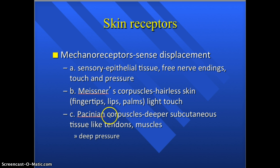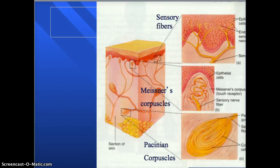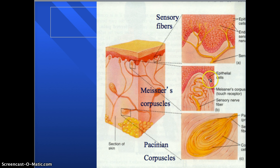Then there are lamellated Pacinian corpuscles, found in the deep dermal tissues of your hands, feet, penis, clitoris, urethra, breasts, tendons, and ligaments. They are stimulated by heavy pressure and stretch, respond mostly to deep pressure, and also detect vibrations in tissues. In the diagram, free nerve endings are found between epithelial cells. Meissner's corpuscles are small oval masses — light pink and flat — with nerve fibers branching into the corpuscle and ending in a knob. Pacinian corpuscles are large, ellipsoidal, and composed of many connective tissue cells and tissue fibers.